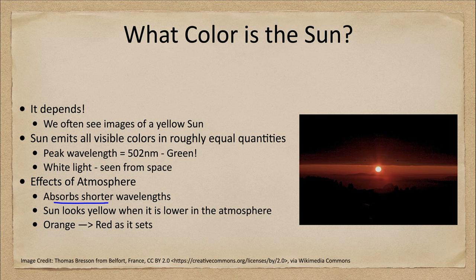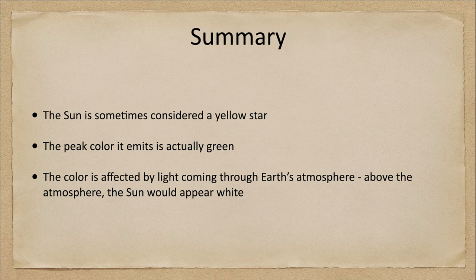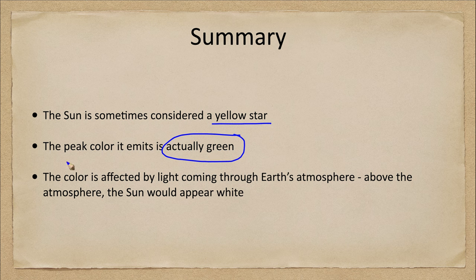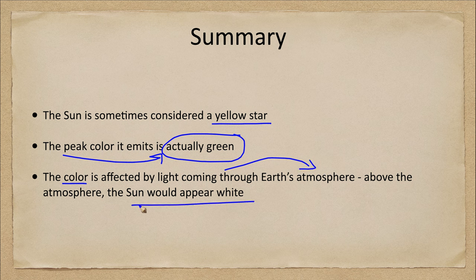In reality, the Sun peaks in green light, but that does not mean that it looks green. It means it's giving off a range of wavelengths in the visible spectrum and that's just where the peak happens to fall. To summarize: we sometimes do consider the Sun to be a yellow star, however the calculation shows that the Sun actually peaks in the green portion of the spectrum. Above the atmosphere, the Sun would appear white — a mixture of all of the colors of the rainbow.